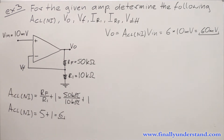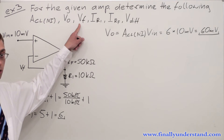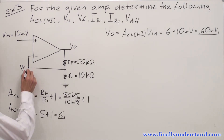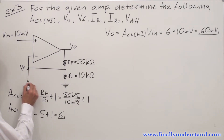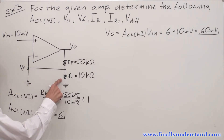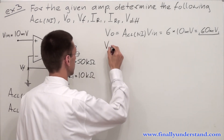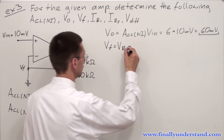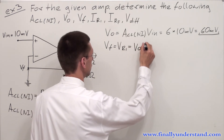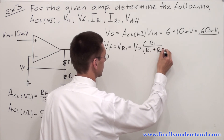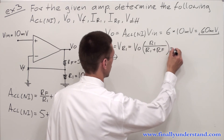Next, I have to find voltage F — my feedback voltage. You're supposed to realize that feedback voltage is the voltage measured from the inverting input to the ground. Also, you're supposed to realize that VF is the same voltage as the voltage across resistor R1. So we can say that VF is equal to V R1, where V R1 is equal to V out times R1 over R1 plus RF.